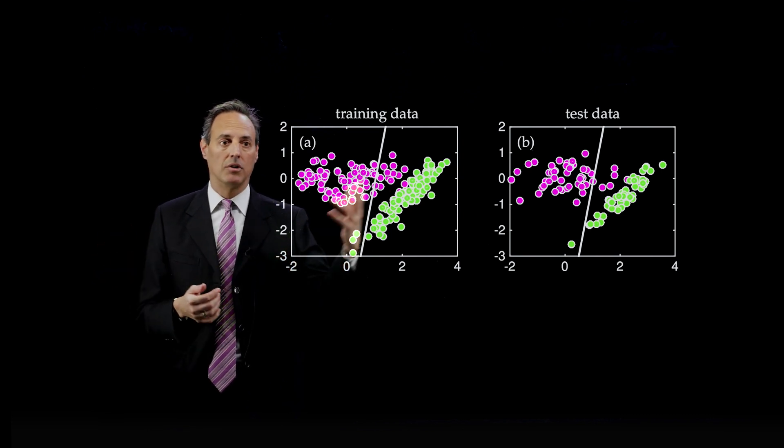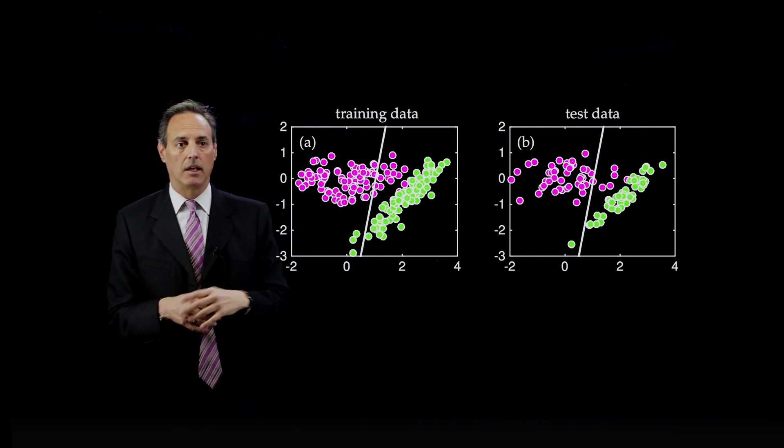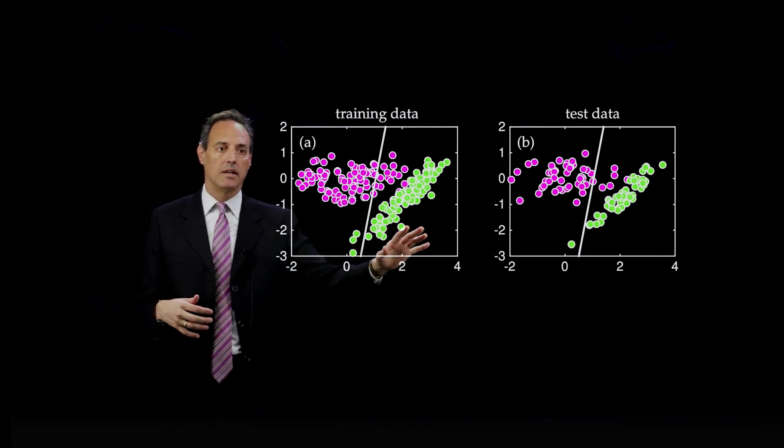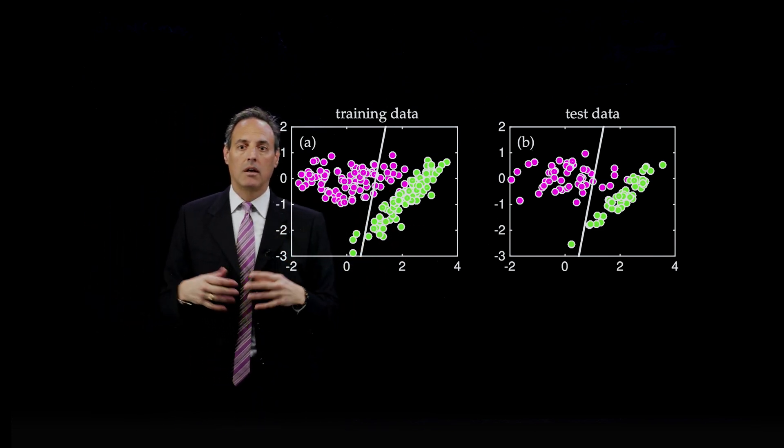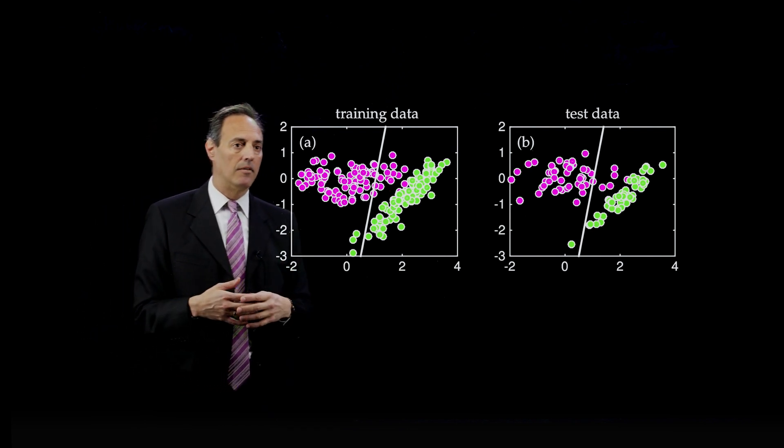And once you do that, you get out some line, which is going to be your classification line, and saying, you know, the data on one side is one cluster, the data on the other side is another cluster. Completely unsupervised. I told it nothing. So, it figured it out by itself.